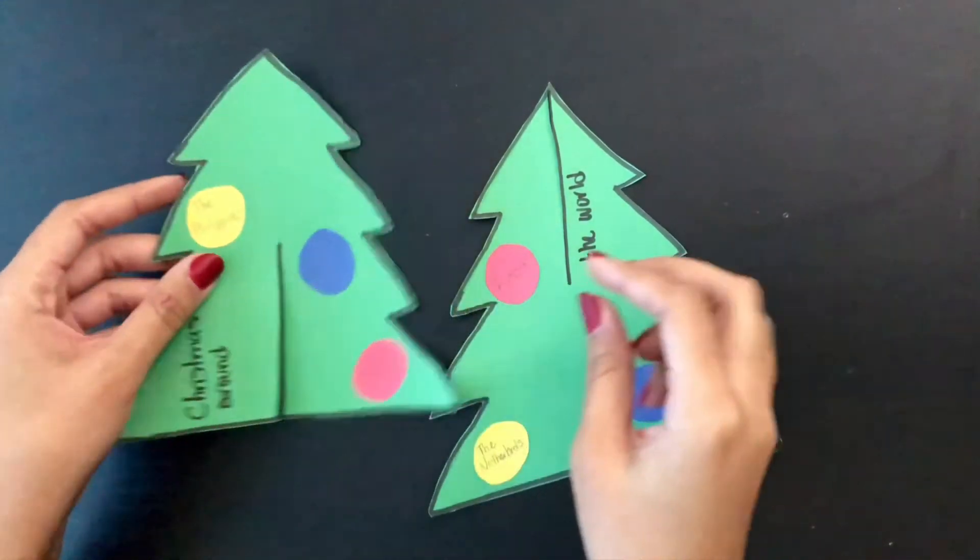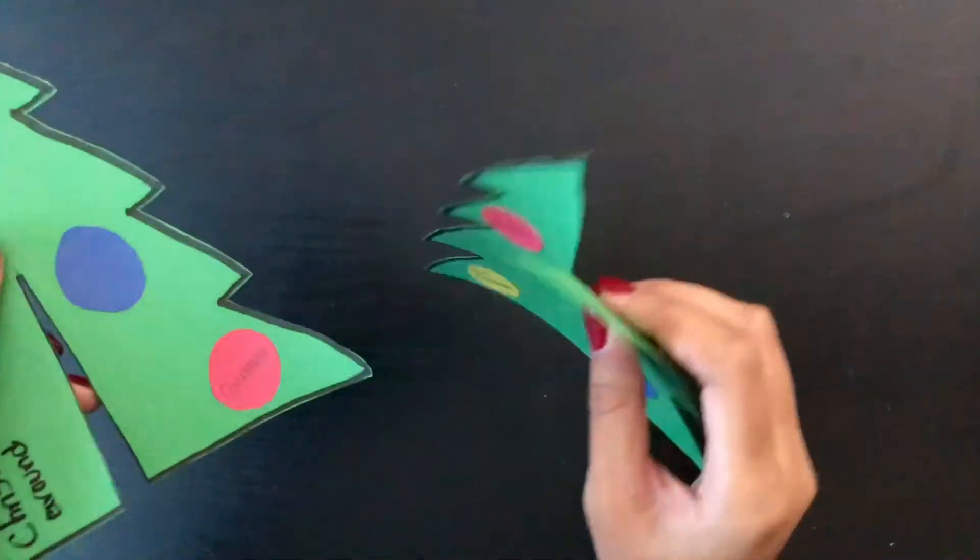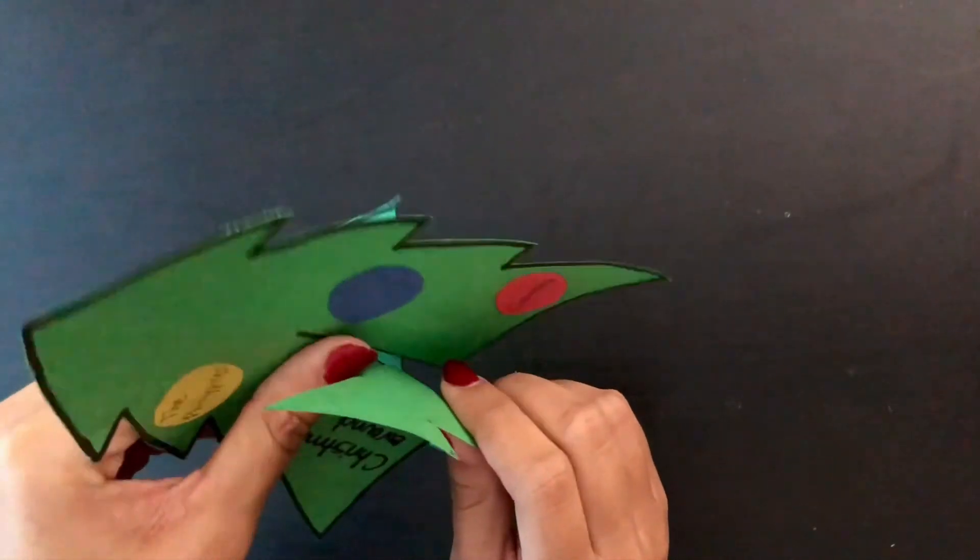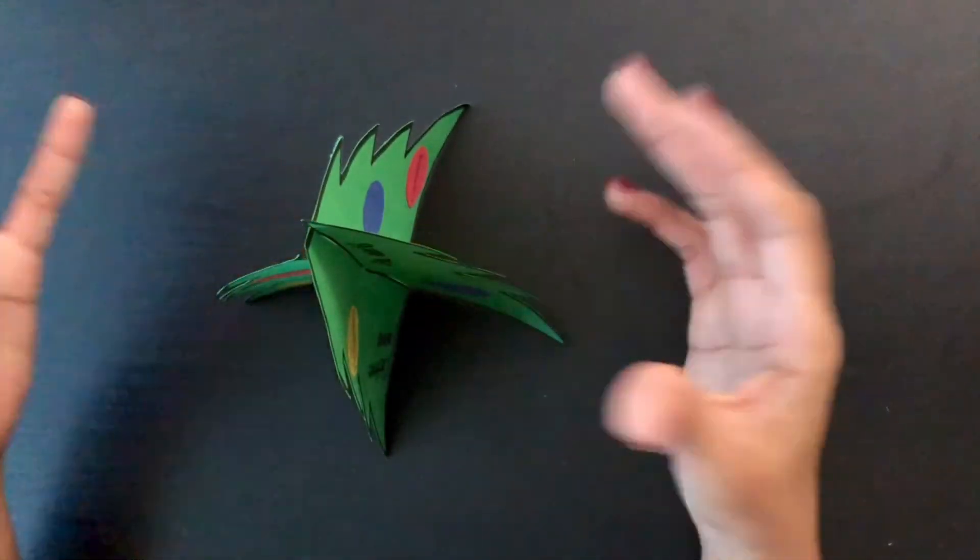So the black lines that we drew, just cut on them like this and then you're just gonna push both trees together as so and you're done.